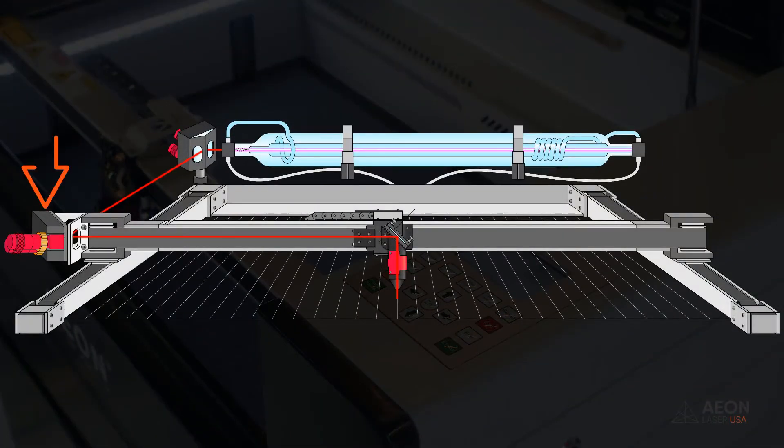Now we're going to align mirror number two. Again, that was number one that we just aligned. Back to our baseball analogy. First base, our runner has made it to second base. Now he's got to round second and go to third.